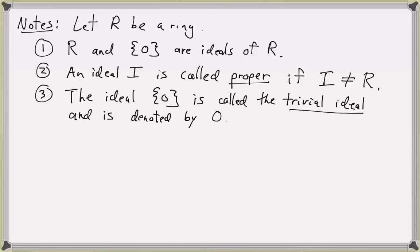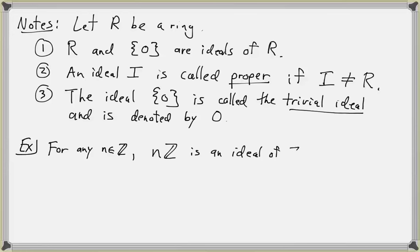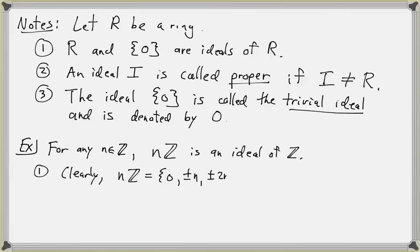Let's look at an example of an ideal in the ring of integers. For any integer n, the set nℤ containing all the multiples of n is an ideal of the integers. Clearly nℤ is non-empty because nℤ contains 0, ±n, ±2n, and so on.